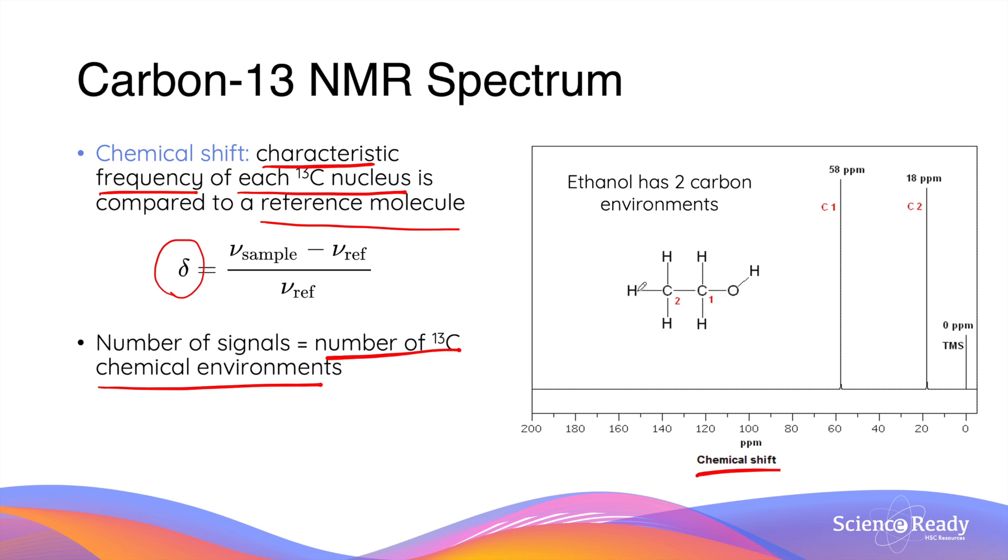For example, a molecule of ethanol has two carbon atoms and the two carbon atoms are also in separate chemical environments as they are connected to different atoms. Carbon-1 is directly connected to an oxygen atom therefore it is affected by its deshielding effect to a greater extent than carbon-2.